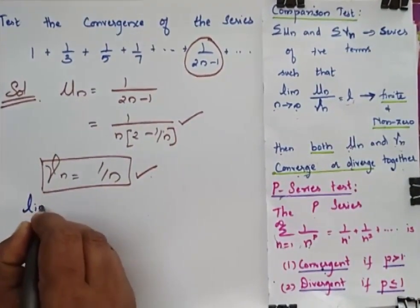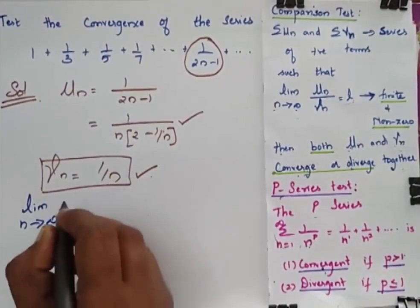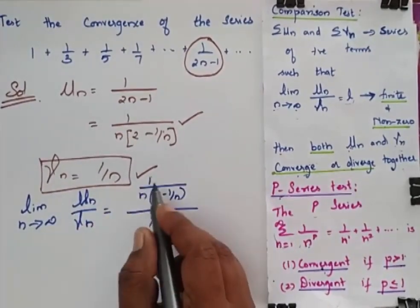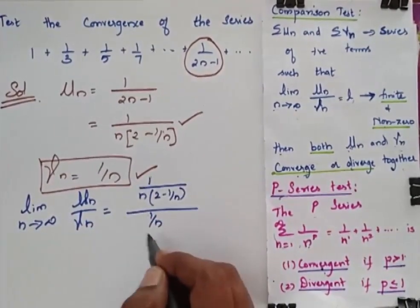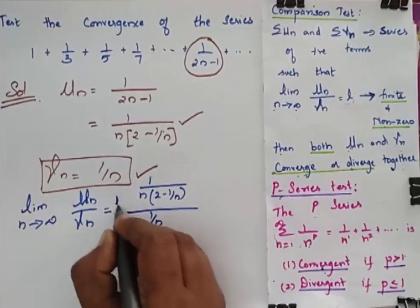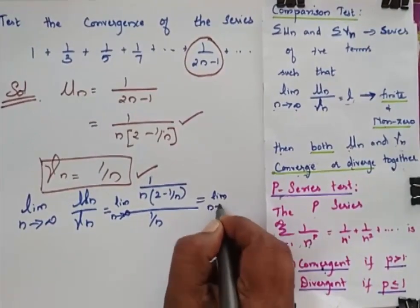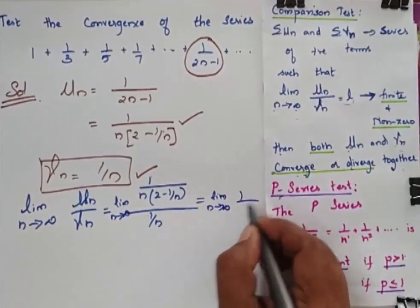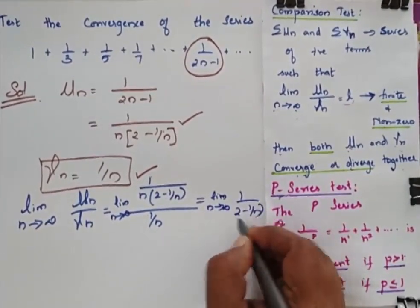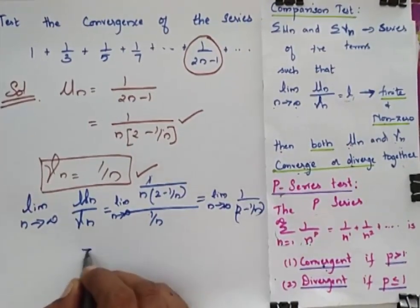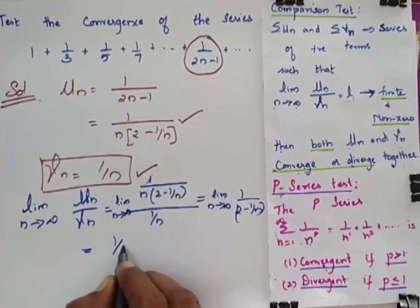So when I find limit n tends to infinity of Un by Vn, I can simplify, I can cancel 1 by n and 1 by n. And I will be getting limit n tends to infinity, this is equal to limit n tends to infinity of 1 by 2 minus 1 by n. Since I can cancel this 1 by n and 1 by n, so now when I apply this I will be getting 1 by 2.